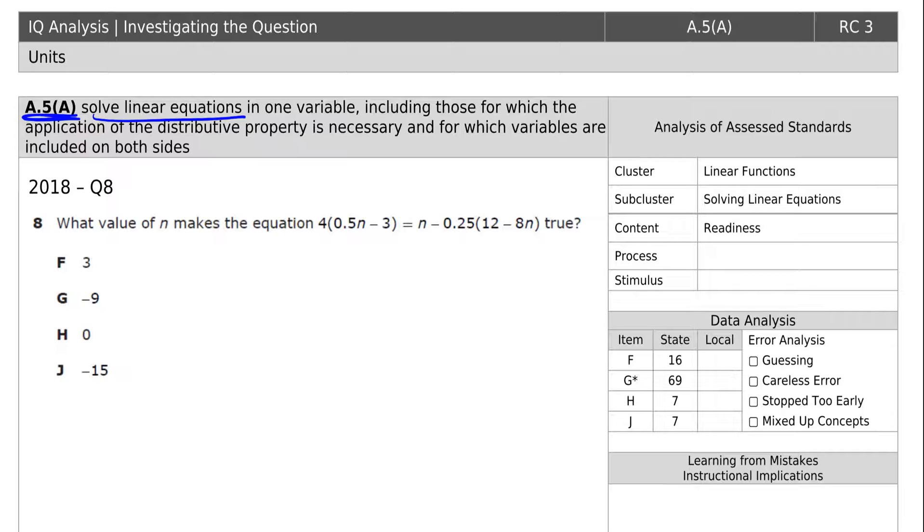In this first problem, we have parentheses and a number in front of it, which means we're going to have to distribute 4 times 0.5n. If you're good with decimals, you know that's half, 0.5 is half, so it's half of 4, which is 2, 2n.